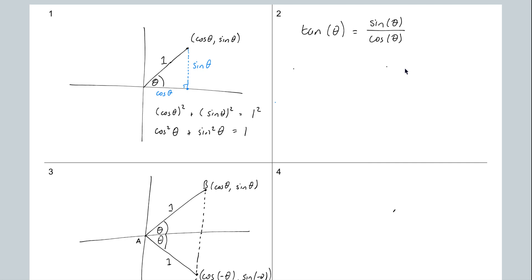By the way we've constructed it, this length Cd is going to be the same as this length Bd. So we have Bd equaling Cd, which is equal to sine theta. That means that the full length Bc would equal Bd plus Cd. Since Bd and Cd are the same length — both sine theta — if you add them together you get two sine theta.